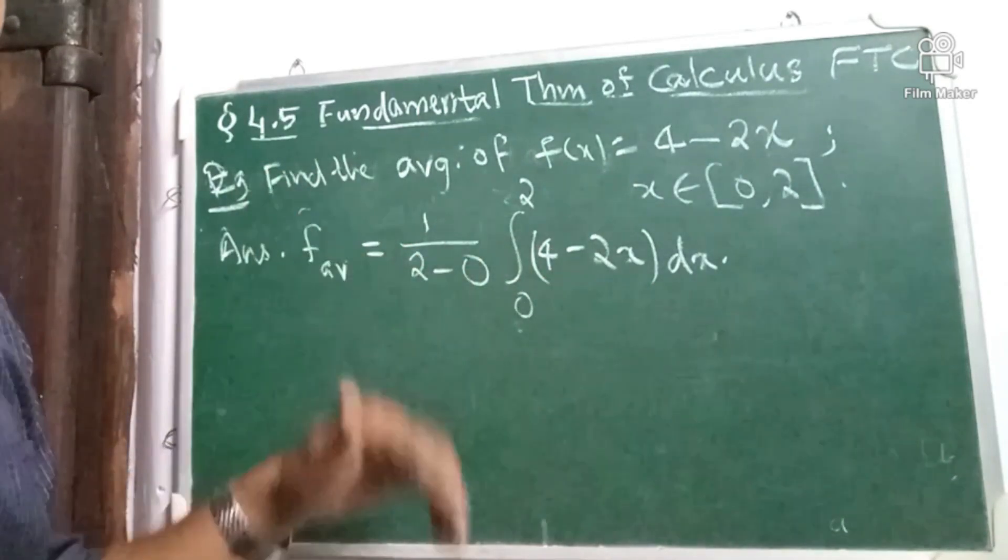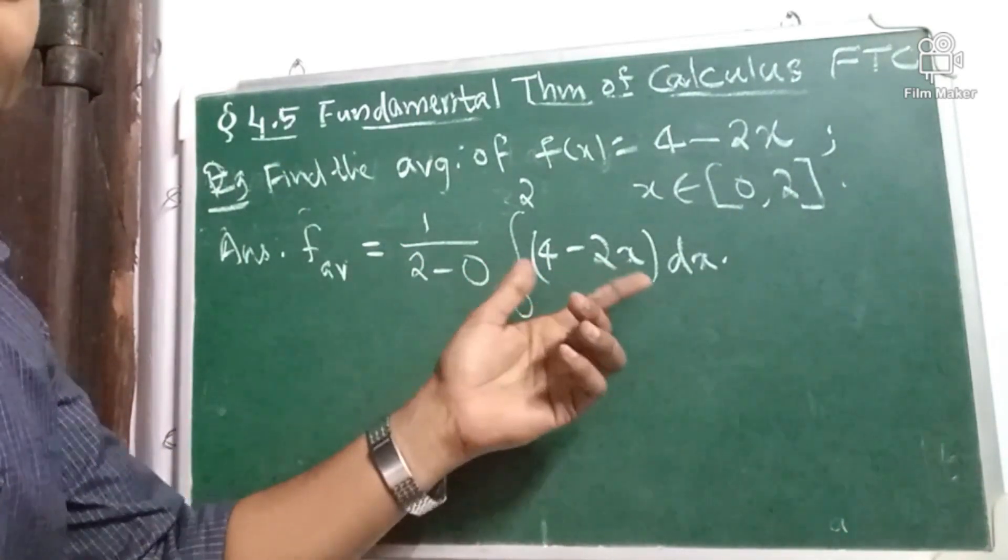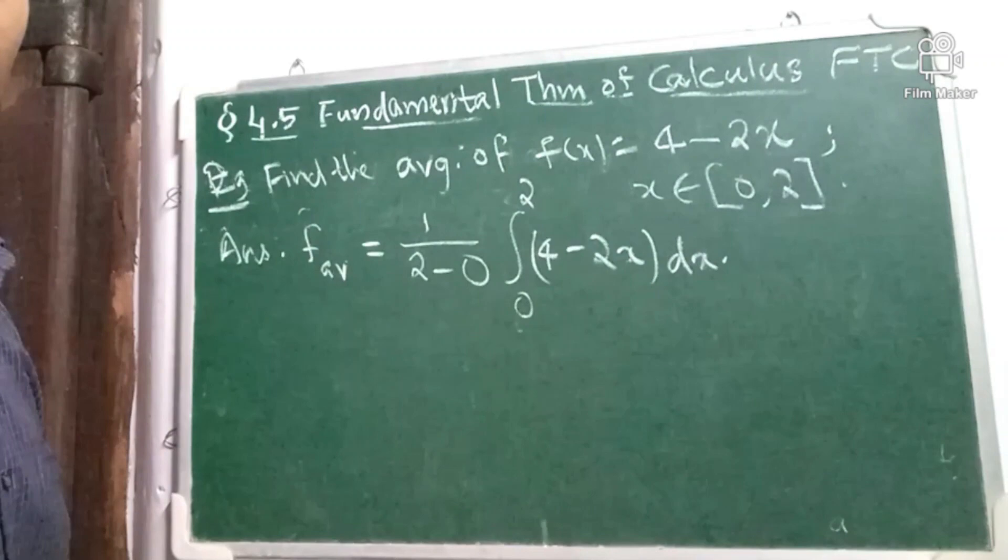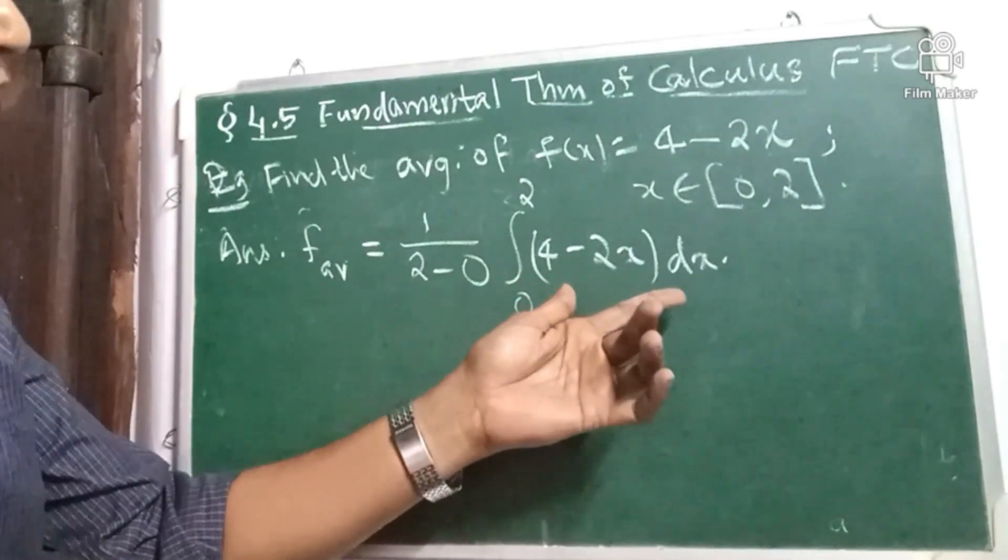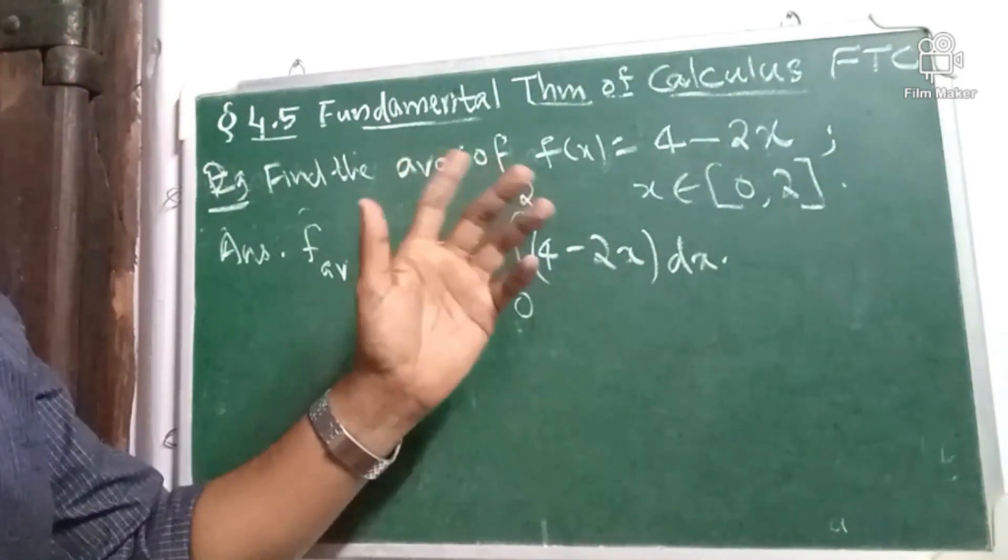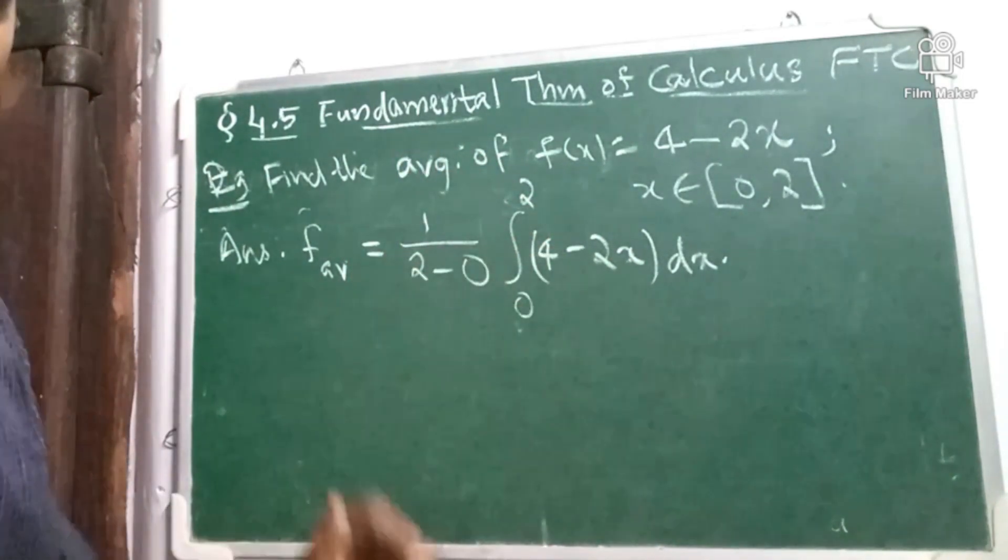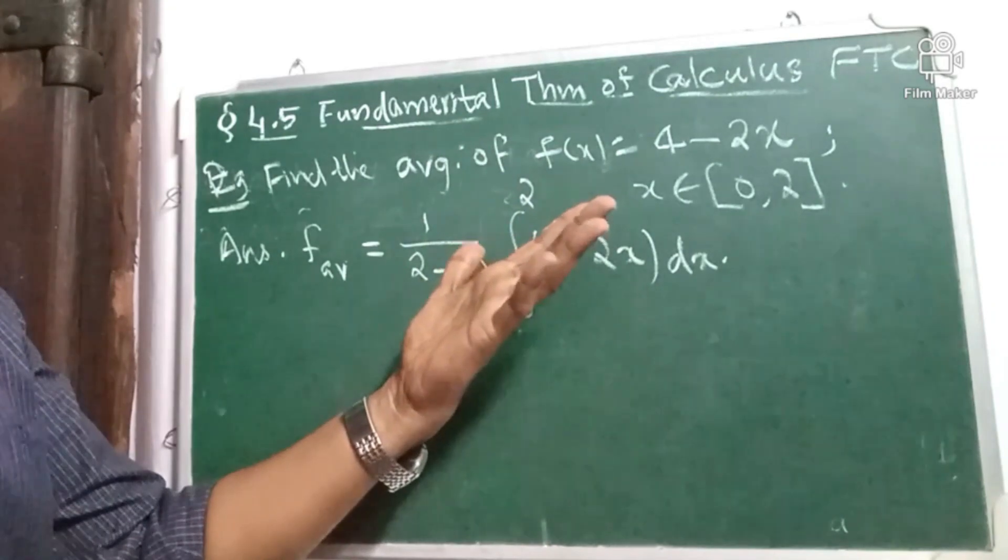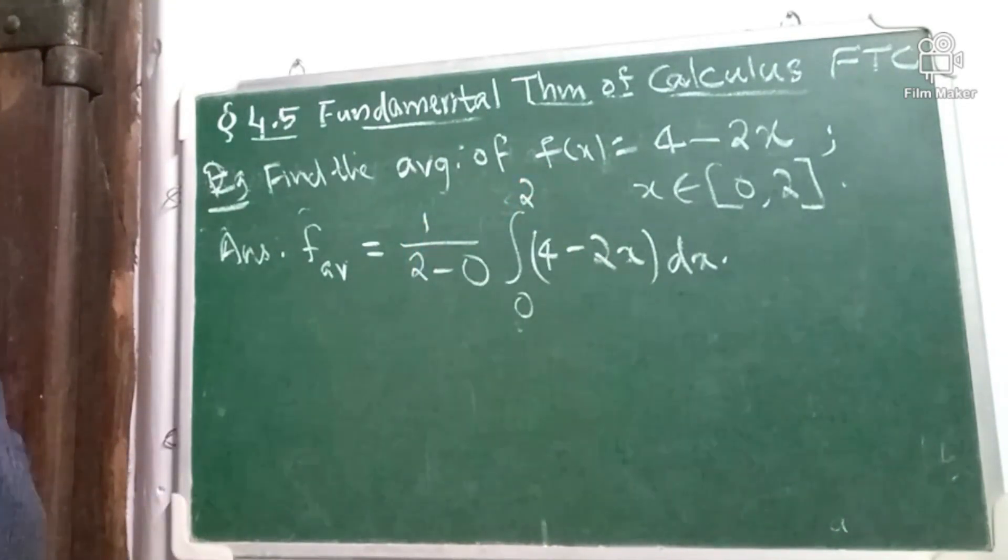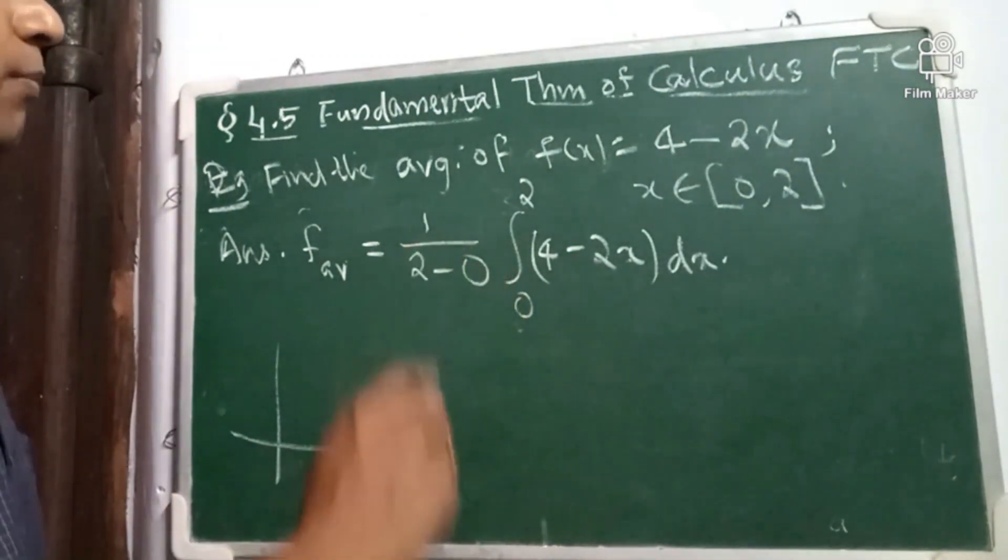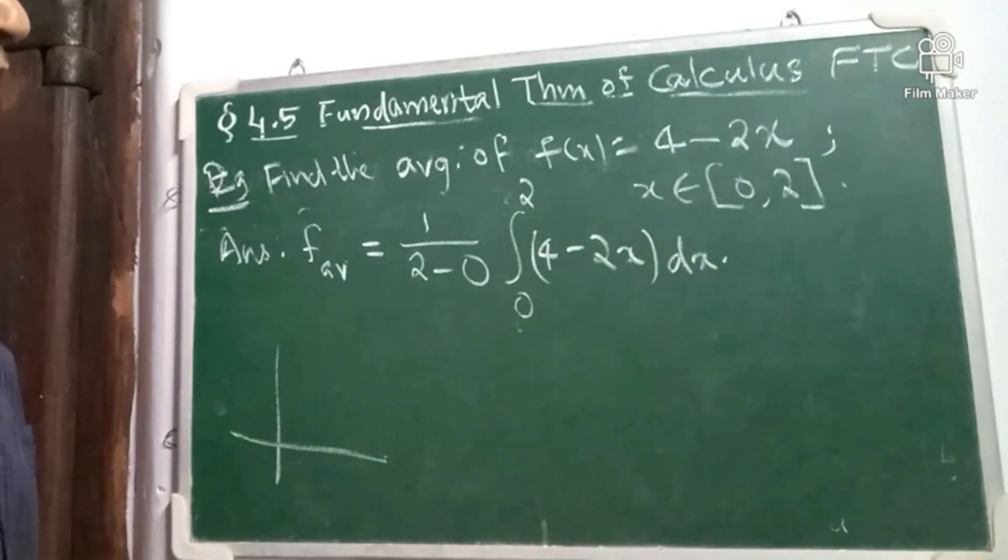Therefore, we have to use some other technique like definition of integral as a Riemann sum. Ultimately, we have to use that method of integral as a Riemann sum. In other words, the geometry is integral represents the area under the curve. So let us draw the graph. So f(x) equal to y, x is equal to 4 minus 2x or y is equal to 4 minus 2x. It is a straight line.